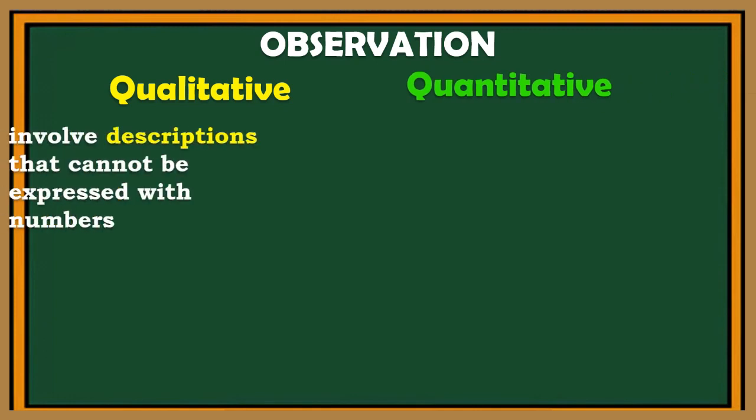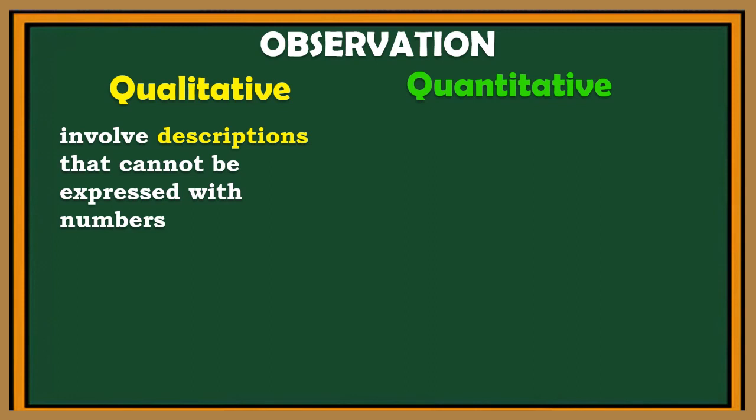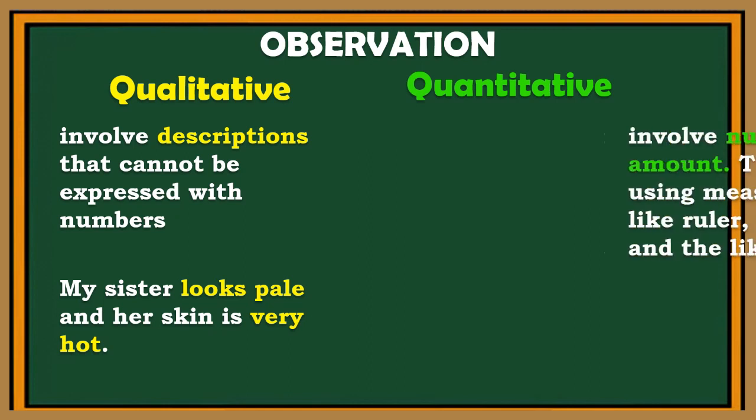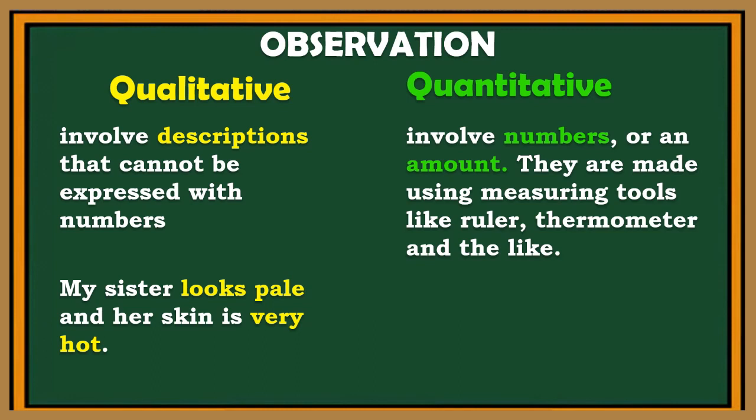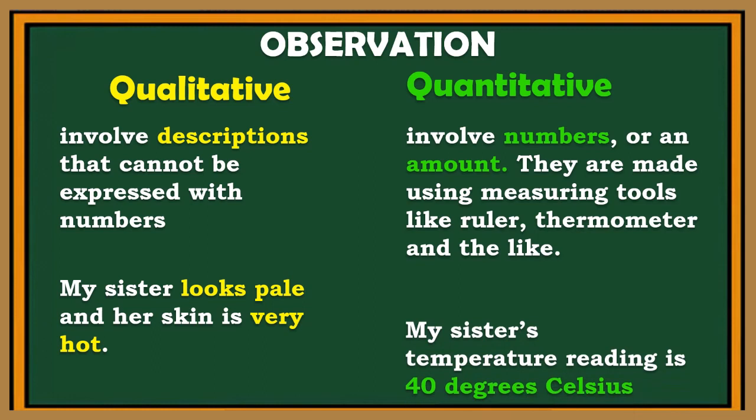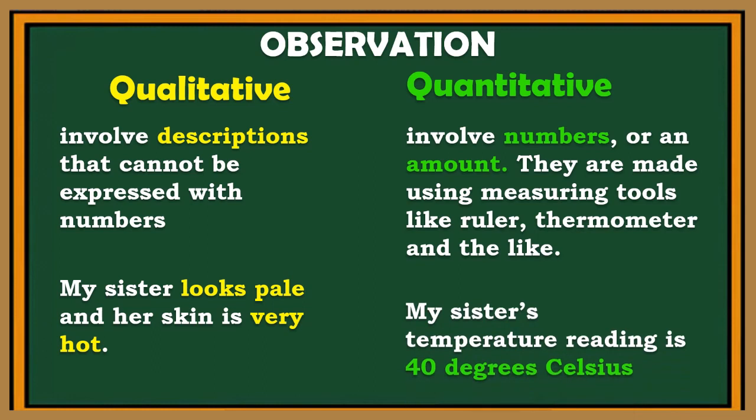Qualitative observation involves descriptions that cannot be expressed with numbers. For example, my sister looks pale and her skin is very hot. Quantitative observation involves numbers or an amount. They are made using measuring tools like ruler, thermometer, and the like. For example, my sister's temperature reading is 40 degrees Celsius.